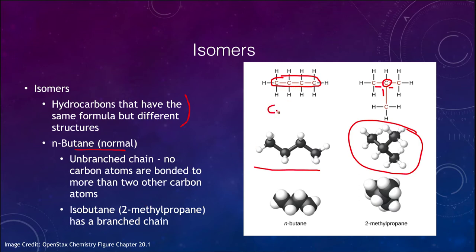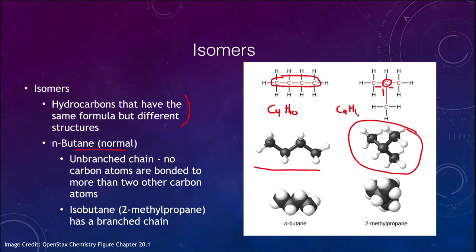Both are C4H10 — four carbon atoms and 10 hydrogen atoms — which follows the pattern: 2 times 4 is 8 plus 2 more is 10. Counting the hydrogens in isobutane confirms the same: 3 plus 2 plus 2 plus 3 around the central carbon atom also gives 10. So both are C4H10, but they are not the exact same material because of the way everything is bonded together — same formula but very different structures.